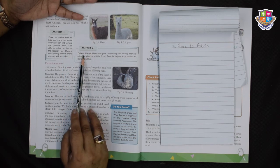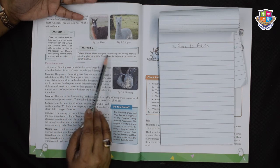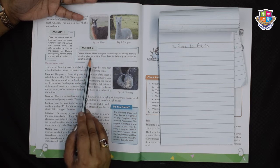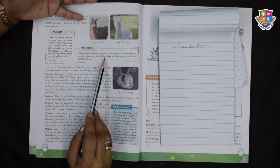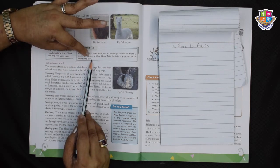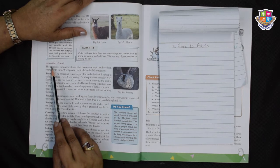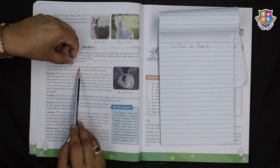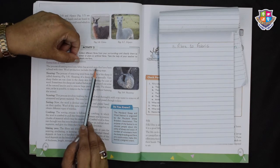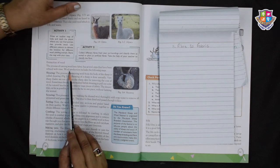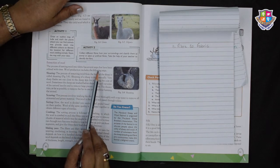Now we come to activity 2. Collect different fibres from your surroundings and classify them as animal or plant or artificial fibres. Take the help of your teacher to identify the fibre. Now extraction of wool. The process of turning wool into fabric has several steps that have been refined with time.